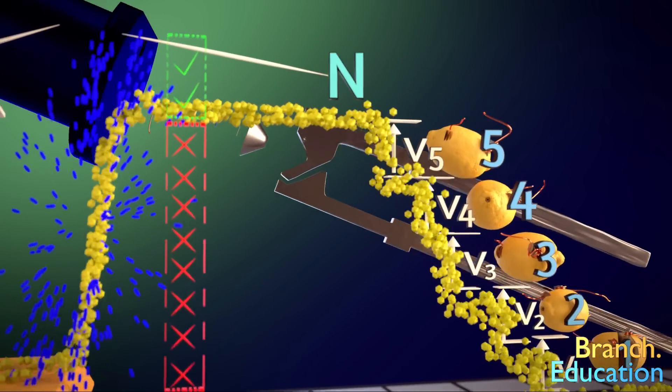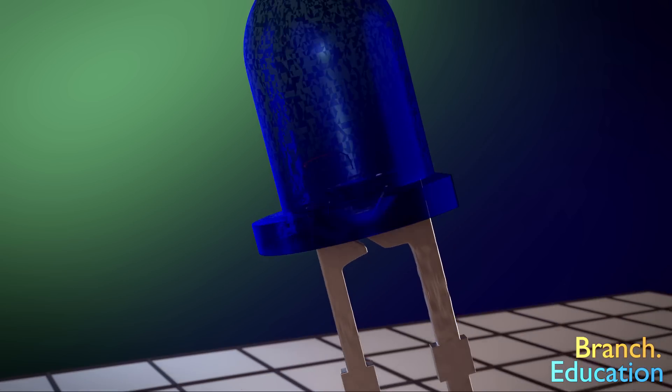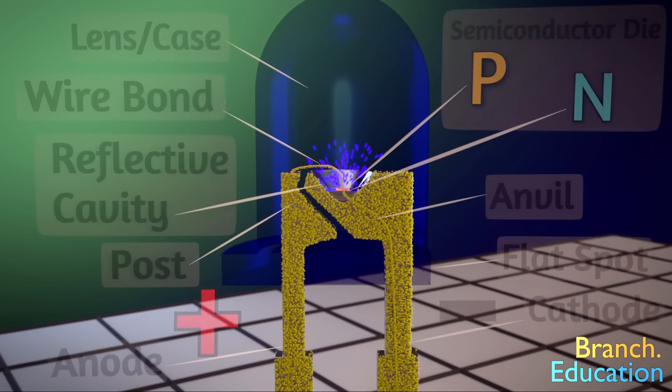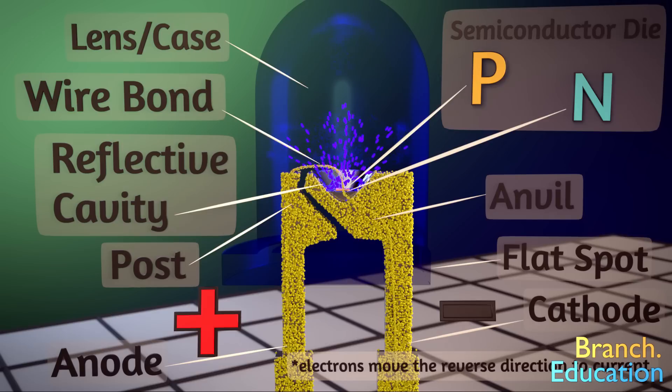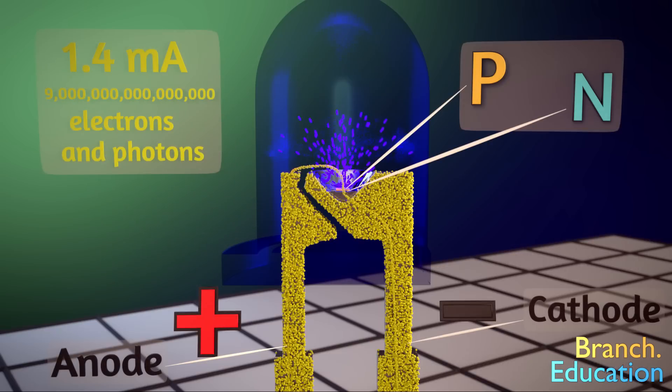Furthermore, the intensity of the light is dependent on how many electrons are flowing through the LED. The more electrons, or current, passing from N to P, the more photons generated and the brighter the light from the LED is. My Super Lemon battery and LED had around 1.4mA running through it, which equates to around 9 with 15 zeros after it, or 9 quadrillion electrons dropping from N to P per second, and around that many photons emitted as well.